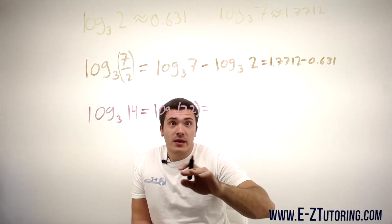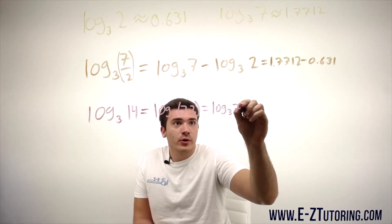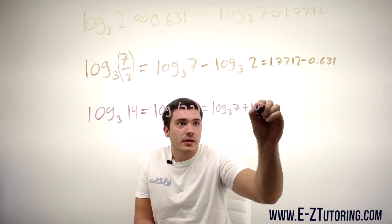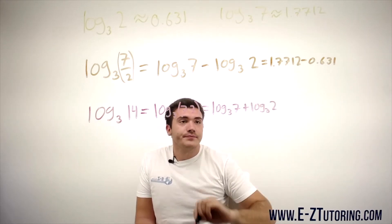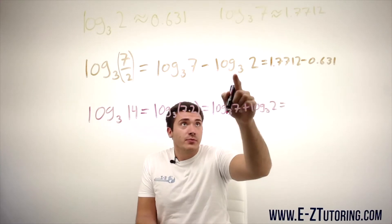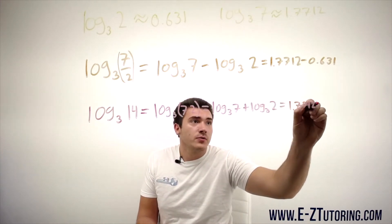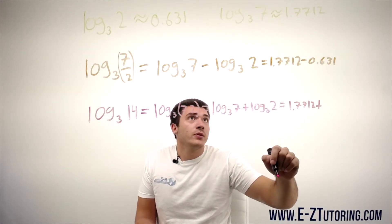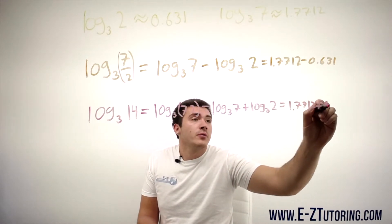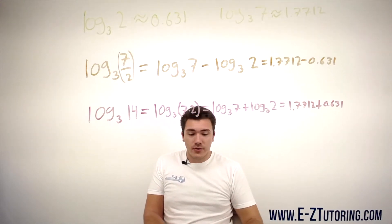And the rule of multiplication in logarithms, whenever you have multiplication you can rewrite it as one log plus another log. And well, we know that the log base 3 of 7 is 1.7712 and log base 3 of 2 is 0.631. You add these up either in a calculator or by hand and there's your answer.